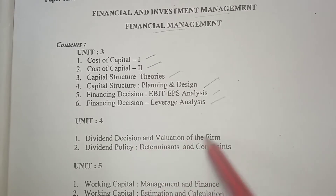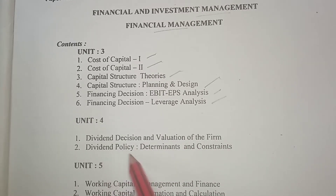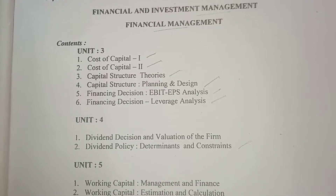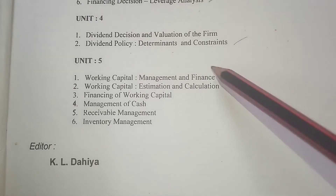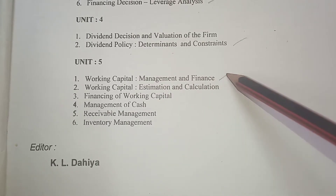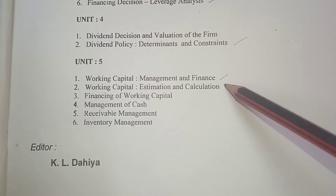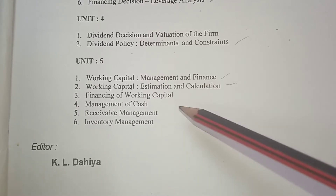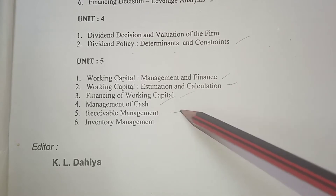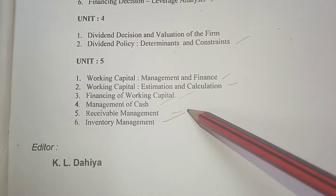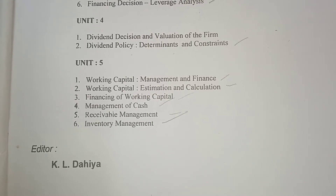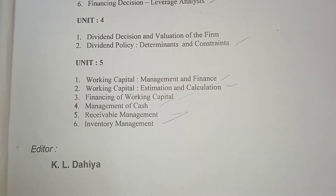Unit fourth is dividend decision and valuation of the firm, dividend policy, determinant and constraint. Then you come to your last unit, unit fifth, that is working capital management finance — working capital estimation and calculation, financing of working capital, management of cash, receivable management and inventory management. This is your overall syllabus and chapters that you have to study in FM.